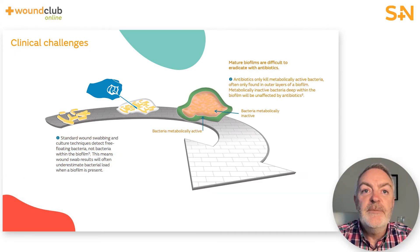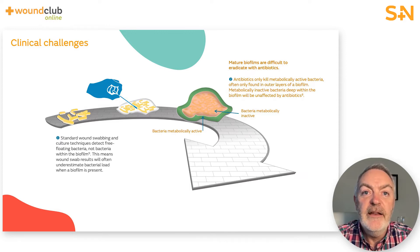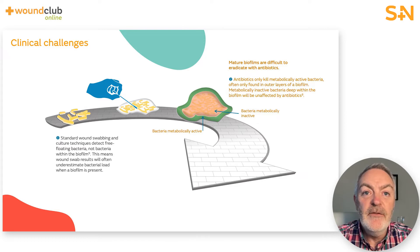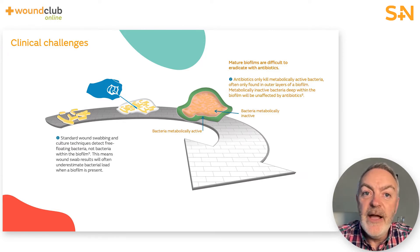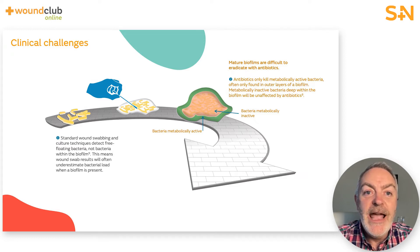The bacteria — especially when the biofilm becomes mature — become very difficult to eradicate with antibiotics. Antibiotics can only kill metabolically active bacteria, which form within the internal deep structure of the biofilm itself. Once the bacteria deep within the biofilm structure become metabolically inactive, they will be unaffected by antibiotics and antiseptics. It tends to be the bacteria at the outer layers of the biofilm that are metabolically active, while the core cells within the biofilm become metabolically inactive and protected from antibiotics.